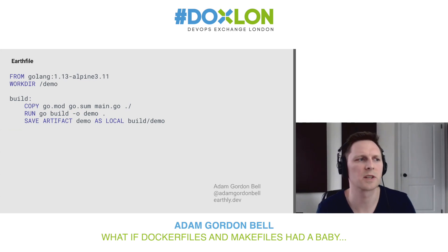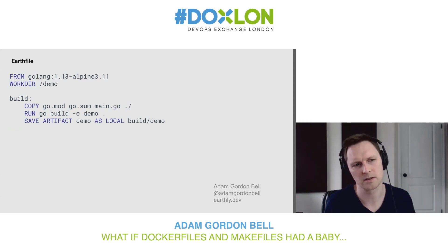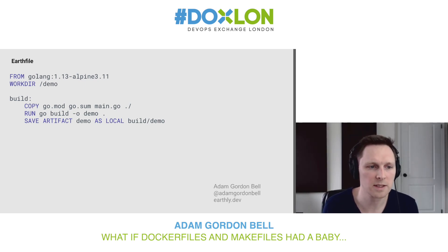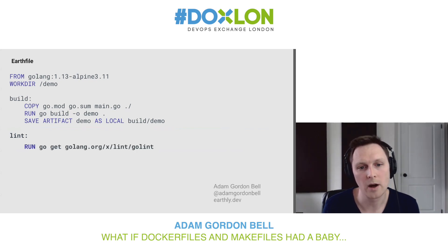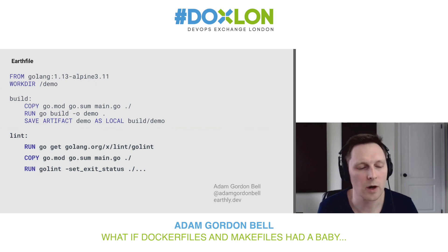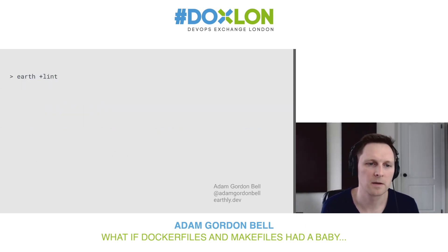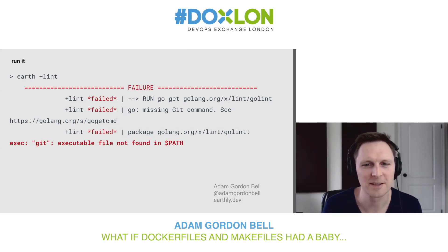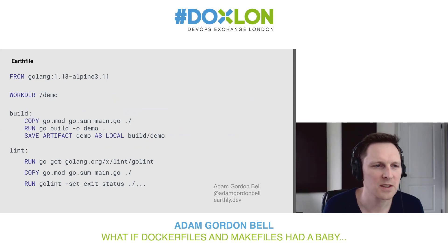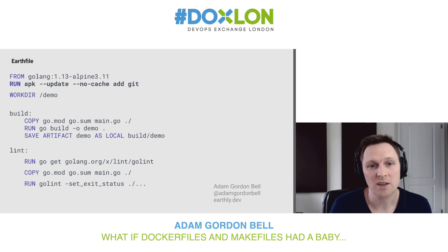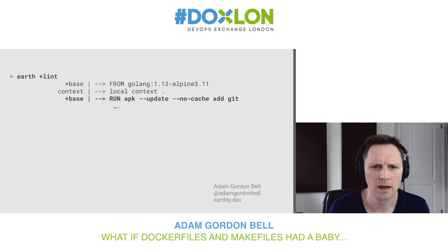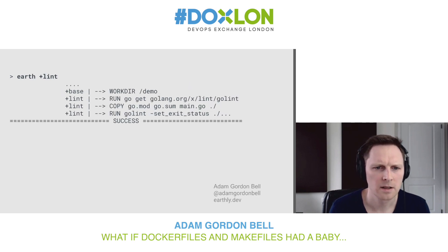Oftentimes in a build you want to do things that are merely pass/fail — like run a test or run a code linter. Let's do linting: we put in a new target 'lint', run the command that will install golint, copy in our files, and then we can run it. If you run this, it actually fails because we need to install Git. So we go back to our file and, just like in a standard Dockerfile, we can add dependencies — using the Alpine package manager we add Git. If we run it again you can see it's installing Git, and then success — now we're linting and it works.